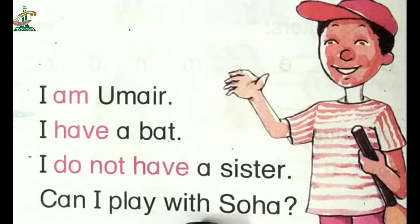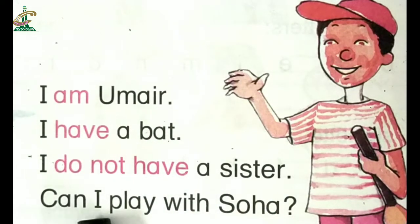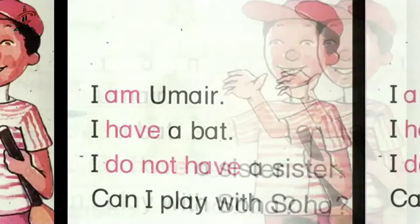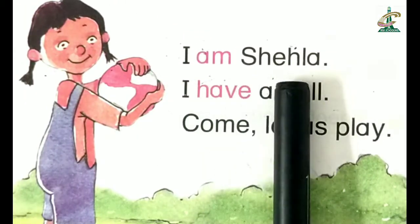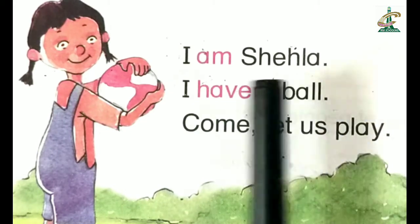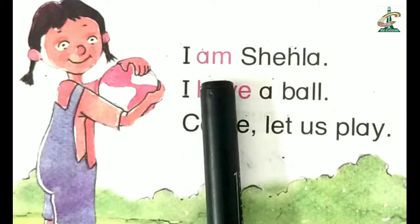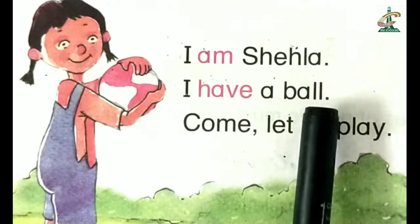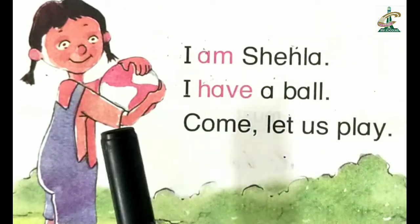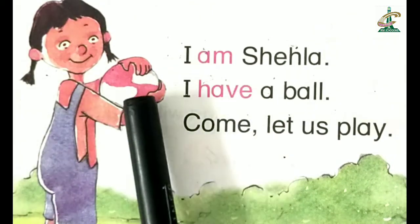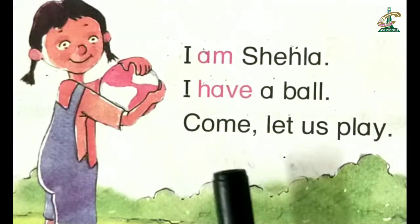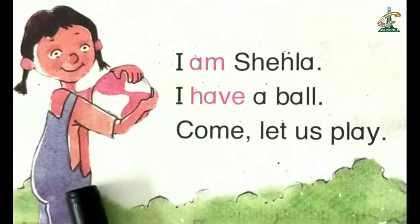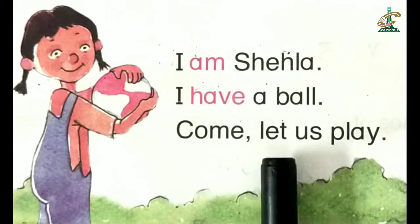Can I play with Soha? Umair کیا کہہ رہے ہیں؟ کیا میں Soha کے ساتھ کھیل سکتا ہوں؟ I am Shehla. یہ کیا بتا رہی ہیں؟ I am Shehla. I have a ball. یہ کیا بتا رہی ہیں؟ I have a ball. Come, let us play. اور یہ کہہ رہی ہیں: آئیے کھیلتے ہیں۔ Come, let us play.